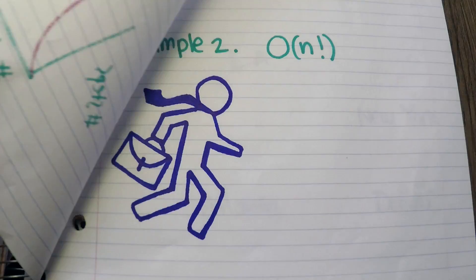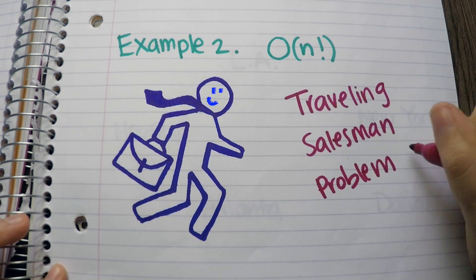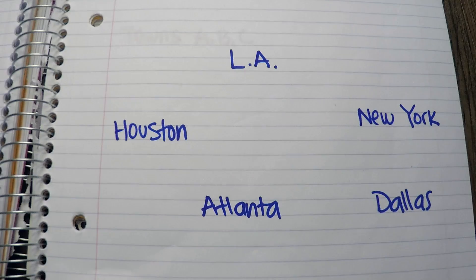Example 2, O(n factorial). A great example for this is the traveling salesman problem.